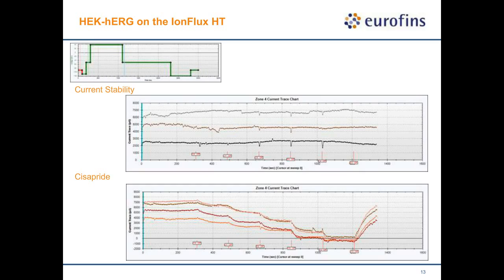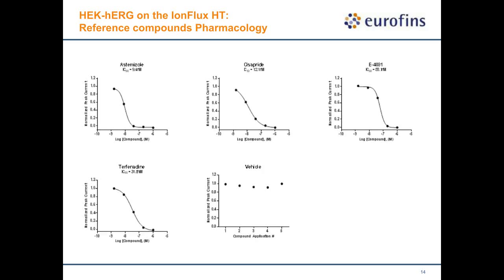Reference compounds tested on the hERG channel included astemizole, cisapride, E-4031, dofetilide, and time-matched vehicle control. The potency data for all reference compounds was very close to reported manual patch clamp data, and the vehicle control showed minimal rundown across the recording period.